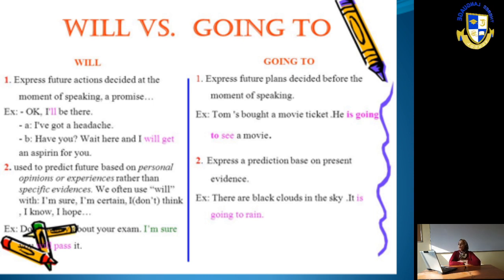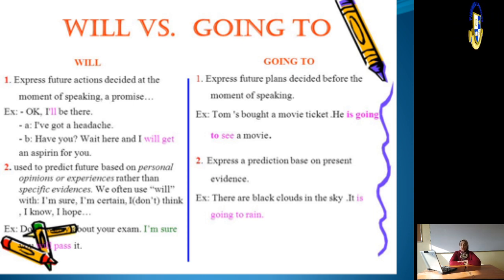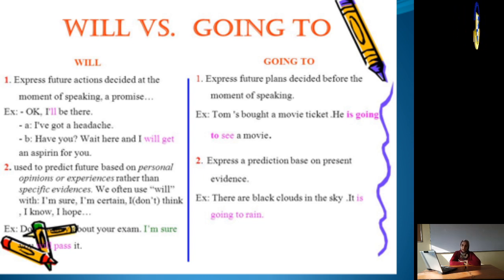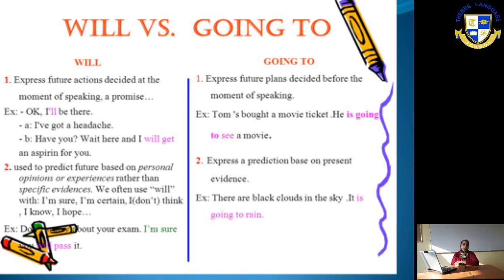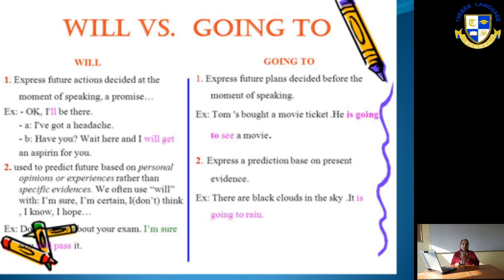Now let's look at 'going to.' You must use 'am,' 'is,' or 'are' before 'going to,' and it must be followed by the main verb. 'Going to' expresses future plans decided before the moment of speaking. For example: 'Tom has bought a movie ticket, so he is going to see a movie' — he went and bought the tickets, meaning he planned to do so.